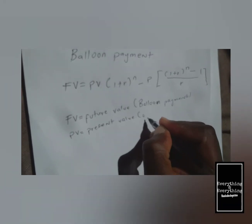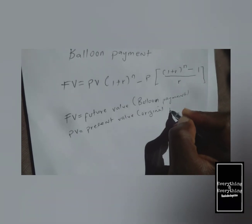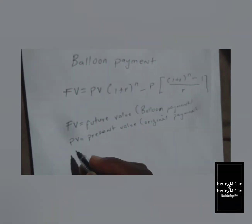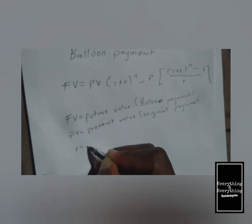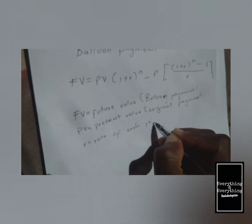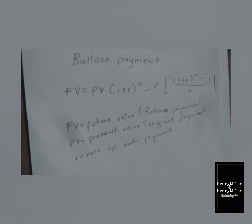This is the original, the first payment. And also our r, this is the rate of each payment. And then we also have the last one.